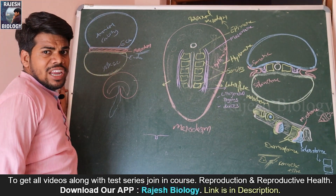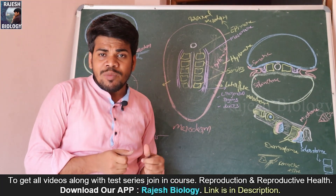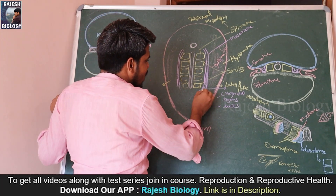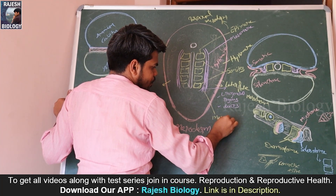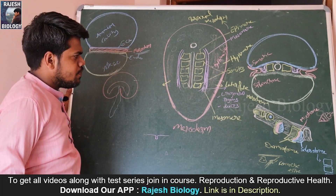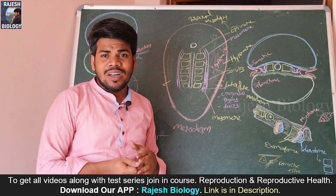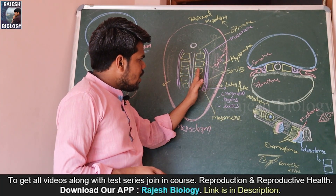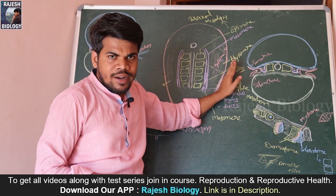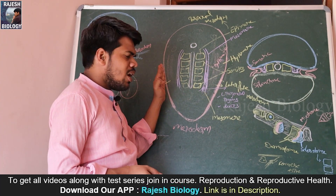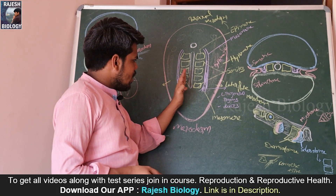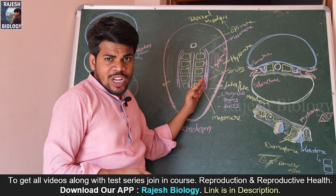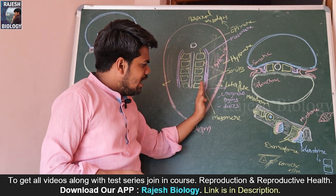In between the epimer and hypomer — the middle groove portion that divides the mesoderm into epimer and hypomer — is called the mesomer, also called the intermediate mesoderm or urogenital mesoderm, because from this mesomer only the urogenital ducts are developed. So the three parts are: epimer, mesomer, and hypomer — one set on each side of the notochord.